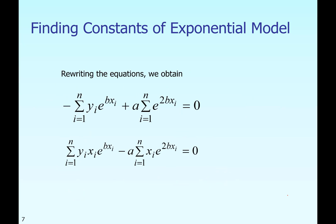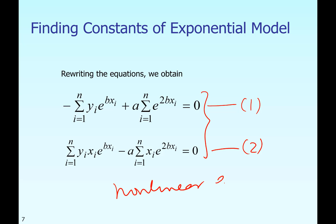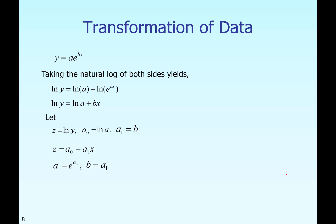Expanding the summations from the previous two expressions gives two equations. These are non-linear equations in terms of a and b, meaning we would have to solve simultaneous non-linear equations numerically. However, what I want to introduce here is how we can find the constants of a non-linear regression model — such as the exponential model — without solving non-linear equations, by transforming the data. Keep in mind we are not transforming the model; the model is still exponential.